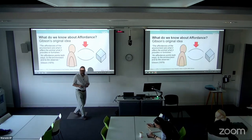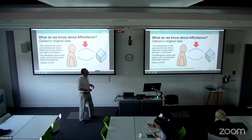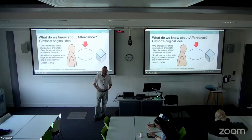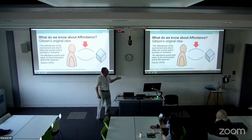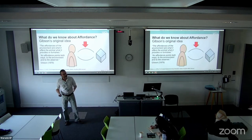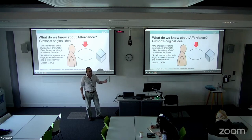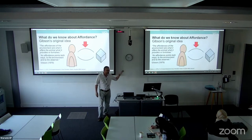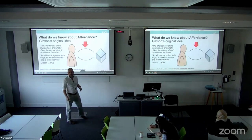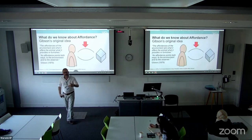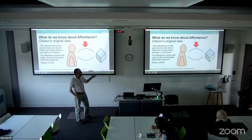Affordance is a term used across multiple fields — edtech, robotics, HCI, and so on — and that's part of the problem. It's been picked up in so many fields that it's kind of lost its power. This is Gibson's original concept from his 1979 work, the ecological approach to visual perception. What's key to me is that affordance is located in space — between people and the world. It's not an object thing or a person thing; it's located in the relationship we have with our environment.